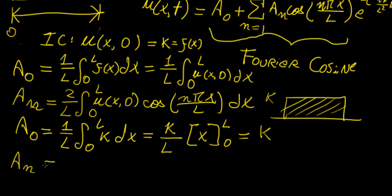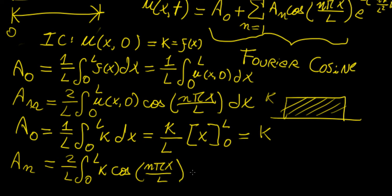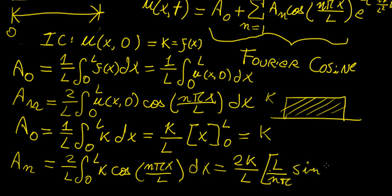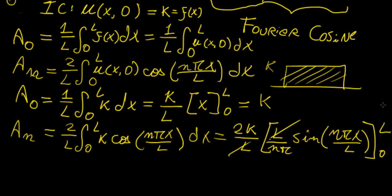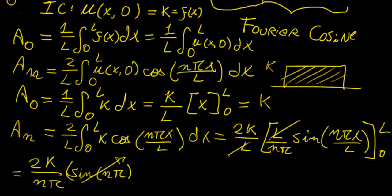For a_n we have 2 over l from 0 to l of k cosine(nπx over l) dx, which equals 2k over l times l over nπ times sine(nπx over l) evaluated from 0 to l. Canceling, we're left with 2k over nπ. When we put l in, we get integer multiples of π for sine, which is always zero. And putting 0 in also gives zero. So a_n equals zero for all n.